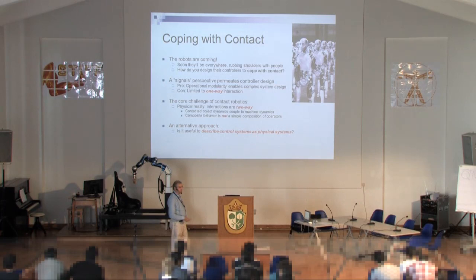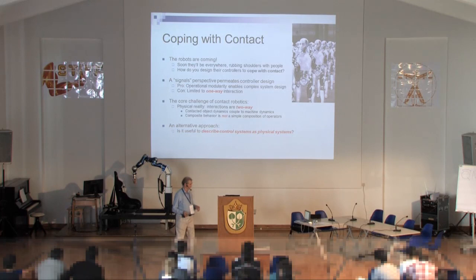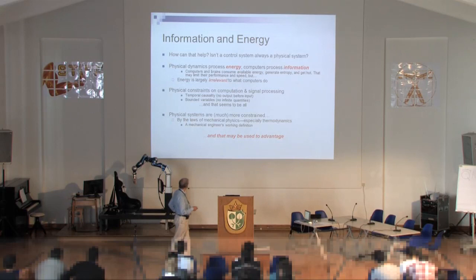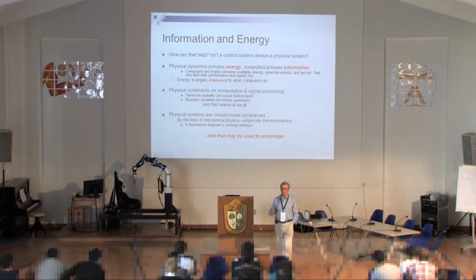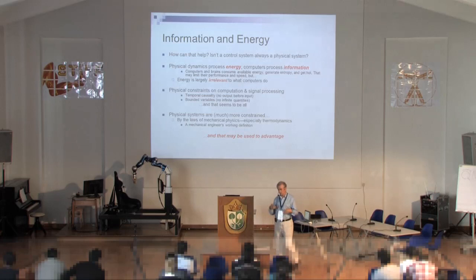One possible alternative, rather than describing control systems as collections of operators like block diagrams, is to describe them as physical systems. A reasonable reaction is: how can that help — isn't a control system always a physical system? The distinction is that computers and controllers really process information, whereas physical stuff processes energy. If you think about computers or brains, of course they consume energy, but that doesn't tell you much about the system. You could stick thermocouples on your laptop, but from measuring thermal properties you couldn't figure out what the laptop was running — you couldn't tell what the software application was from the energetics of the machine.